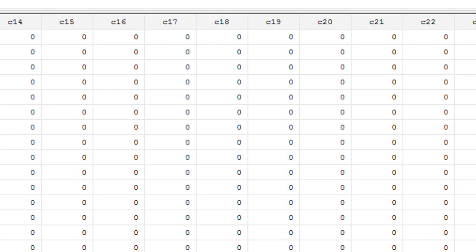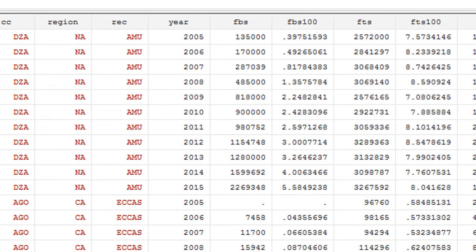So I have 54 dummy variables here. You can see it's a very wide panel. I have 54 individual country dummies.